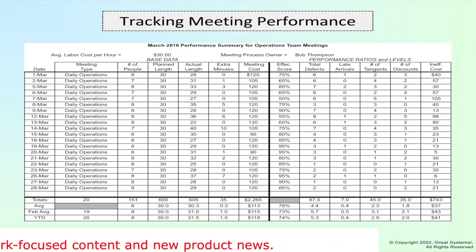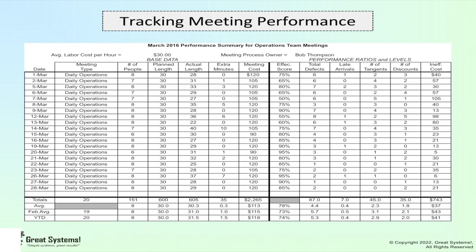Tracking meeting performance. If you want to reduce meeting waste, you have to trend meeting performance over time. A performance summary spreadsheet, similar to the one shown, can be used for this purpose, just as it can for any process. If you prefer to use a database software package such as Access, feel free to — it works just as well for capturing the data, though creating the trend lines may take a little more work.